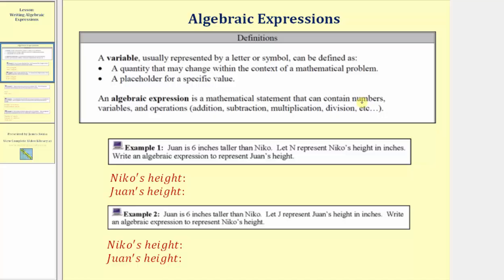Let's look at our first example. We're told Juan is six inches taller than Nico. Let n represent Nico's height in inches, and let an algebraic expression represent Juan's height. We're using the variable n to represent Nico's height, so we'll put an n here. Because Juan is six inches taller than Nico, Juan's height can be represented by the algebraic expression n plus six.